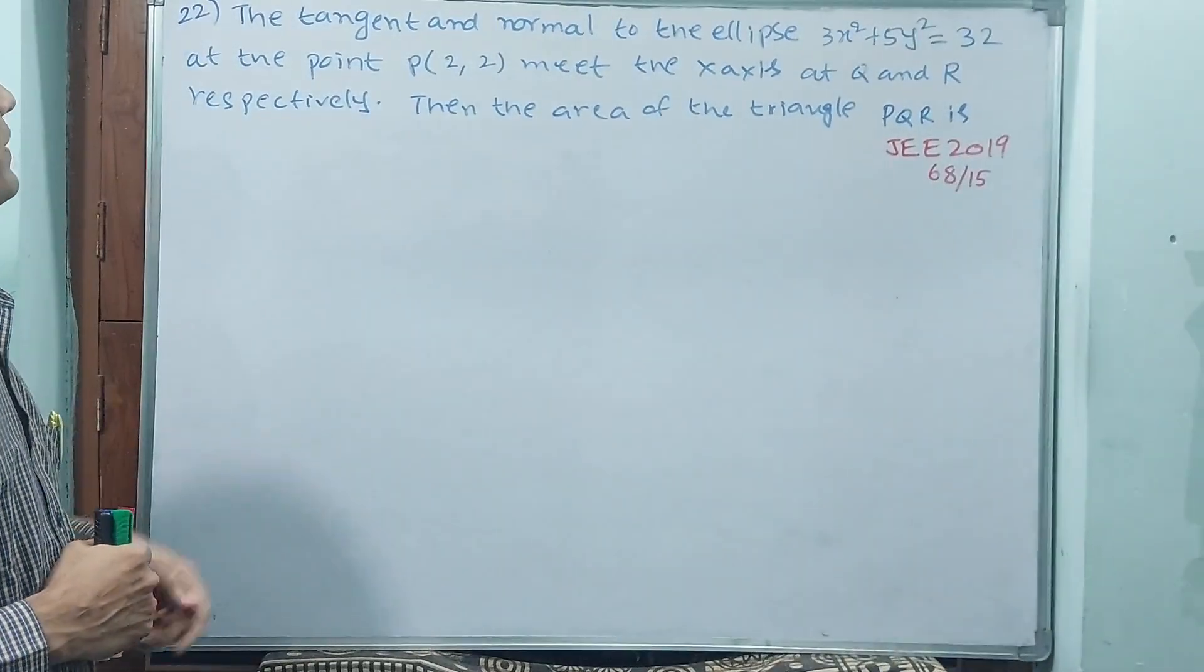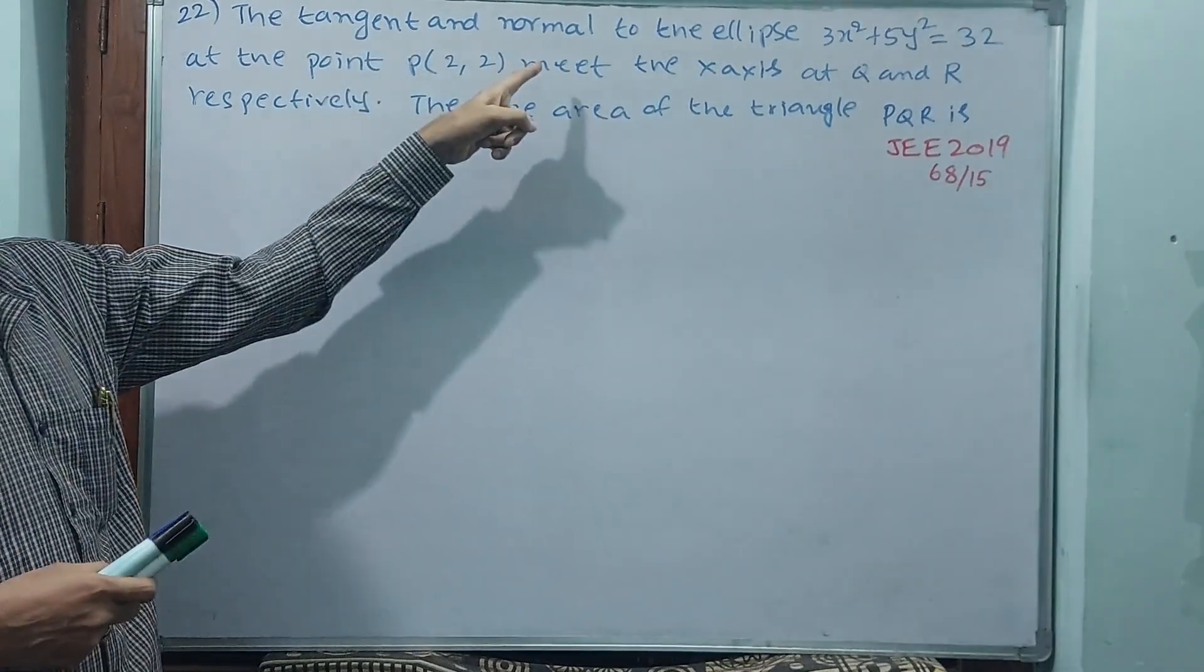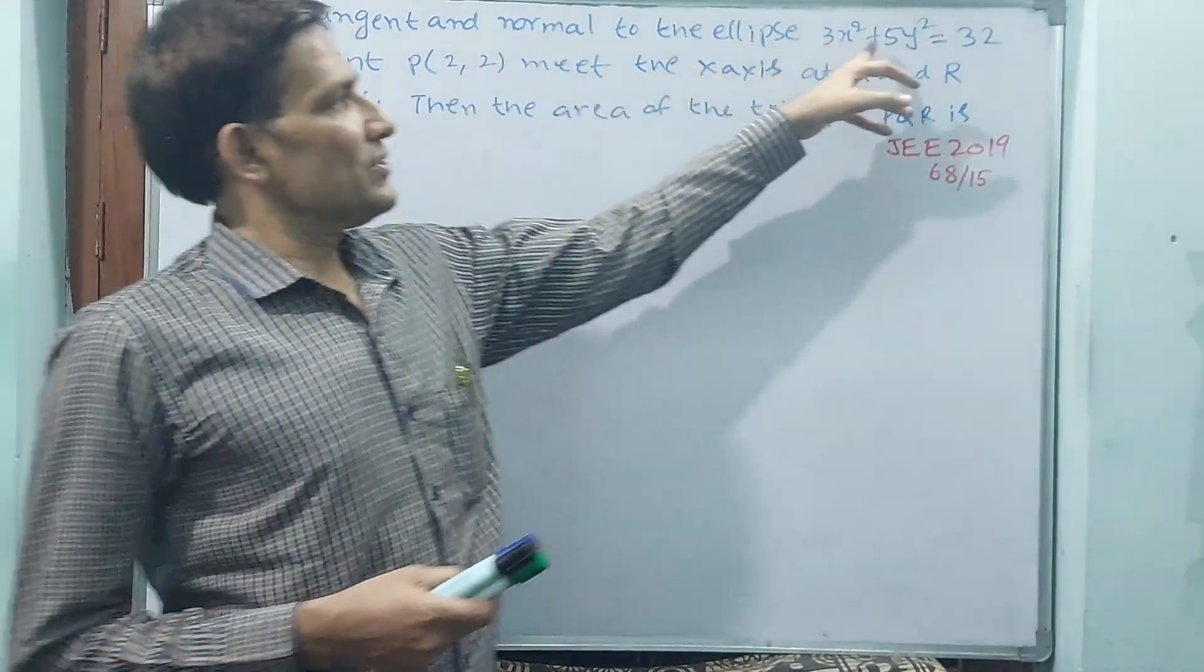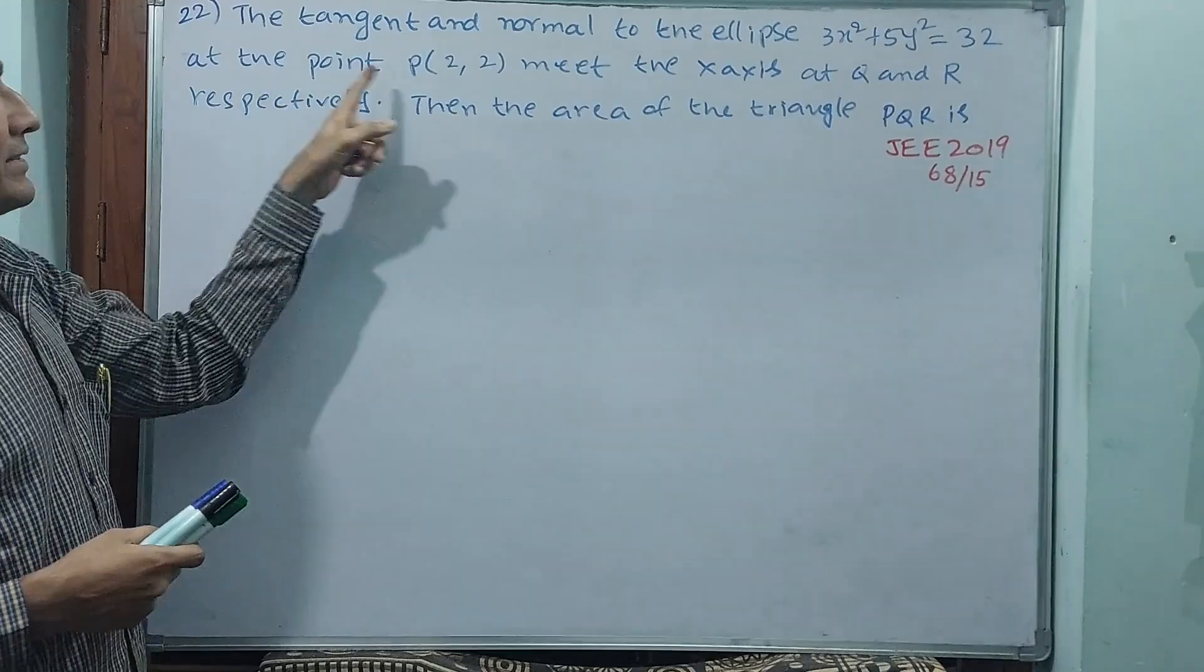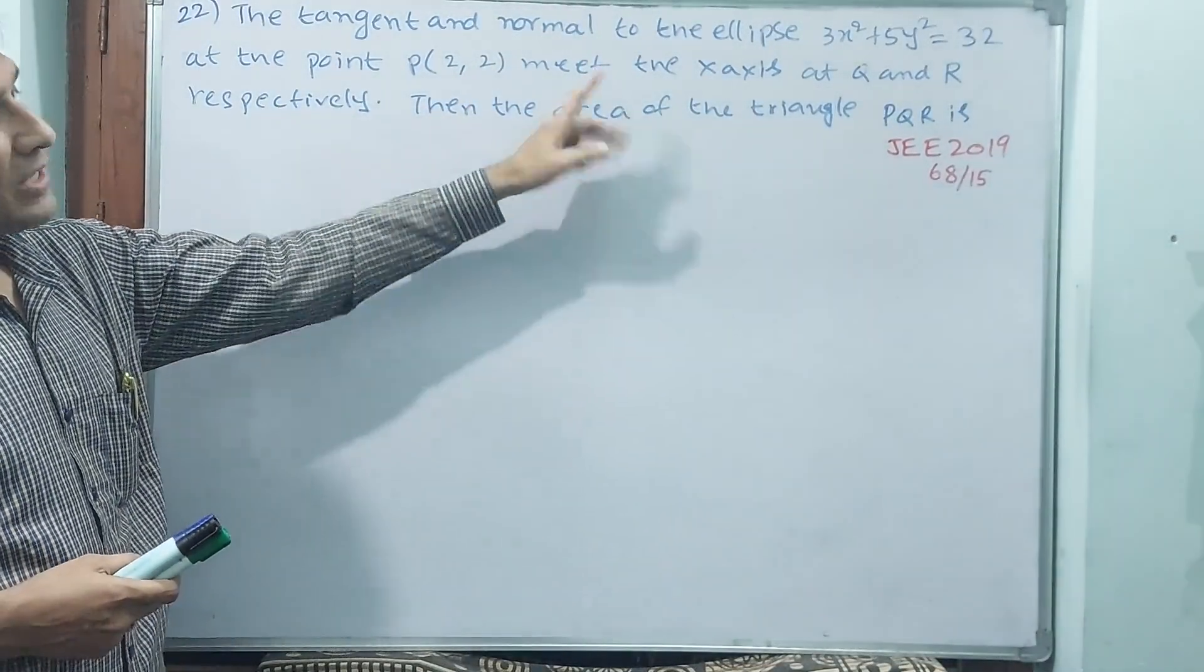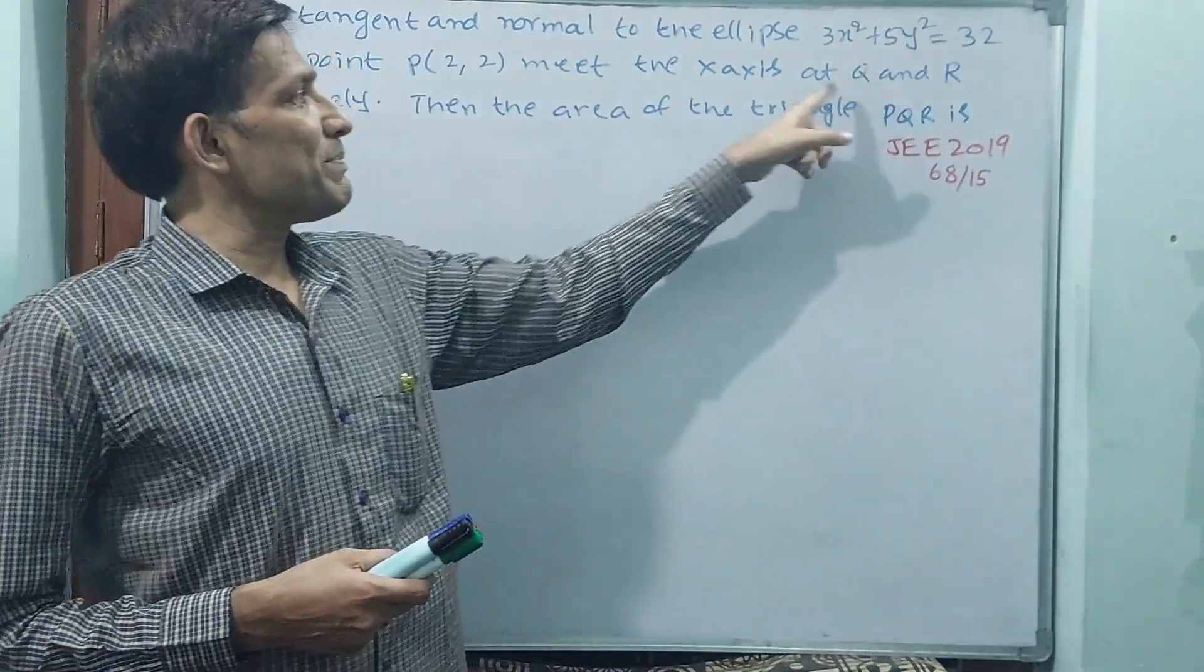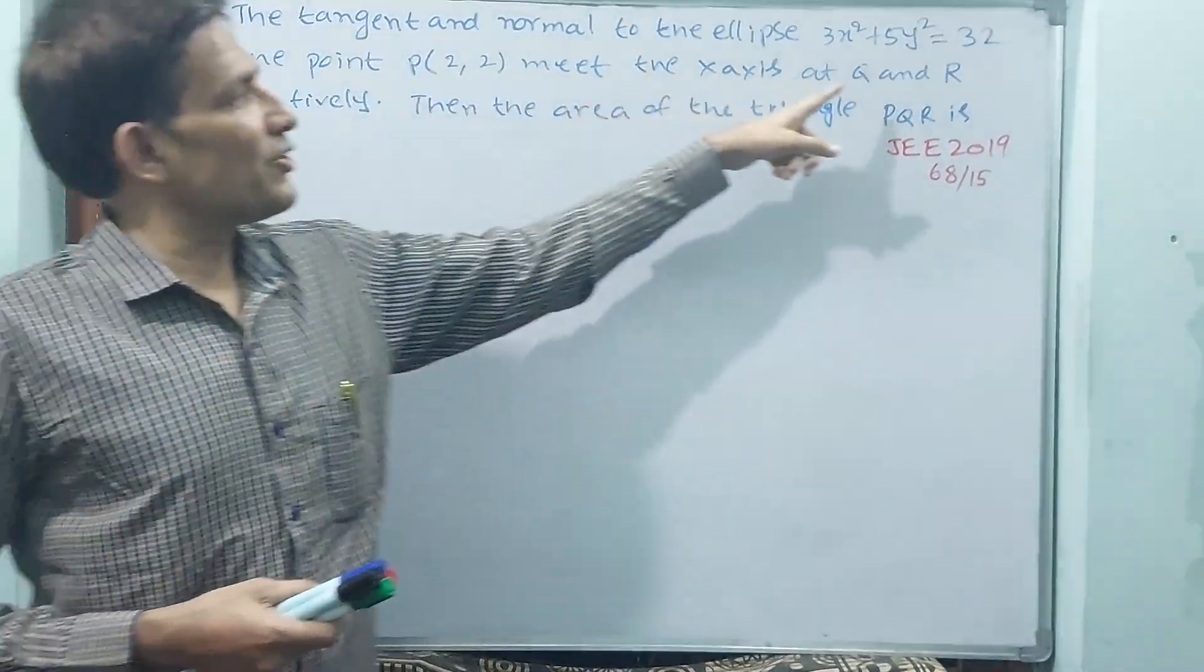See question number 22. The tangent and normal to the ellipse, both they are asking for this ellipse at the point P(2,2) meet the x-axis at Q and R. That means both are meeting at x-axis only, one is at Q and one is at R respectively. Means if tangent is meeting at Q, normal is meeting at R.